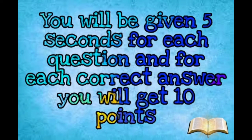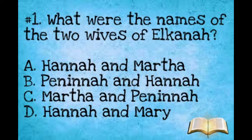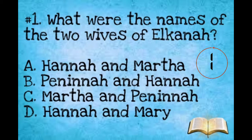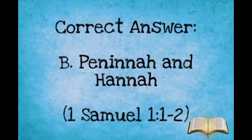You will be given 5 seconds for each question, and for each correct answer you will be given 10 points. Question one: What were the names of the two wives of Elkanah? A: Hannah and Martha. B: Penina and Hannah. C: Martha and Penina. D: Hannah and Mary. The correct answer is letter B, Penina and Hannah.